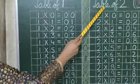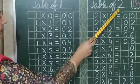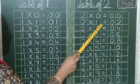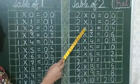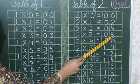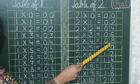Now, table of 2. 2 0s are 0, 2 1s are 2, 2 2s are 4, 2 3s are 6, 2 4s are 8.